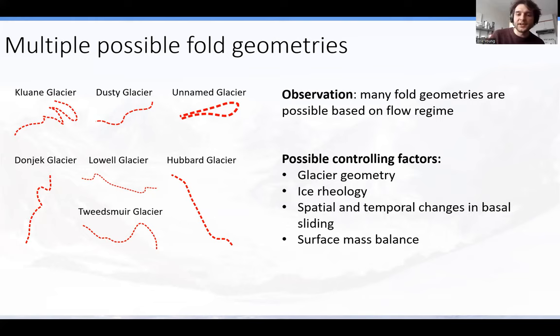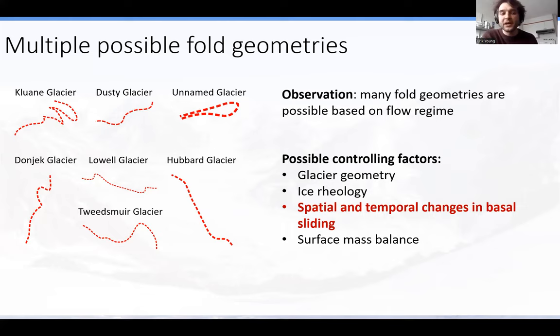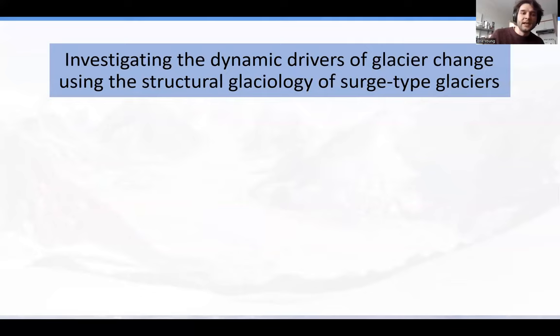What's particularly interesting is being able to resolve spatial and temporal changes in sliding throughout the surge cycle of these large glaciers. It's very hard to monitor and instrument the bed of a glacier, especially during surges — there's such strain that you often fracture the ice all the way through the ice column, gobbling up any instrumentation left behind. What we're aiming to do is use the geometry of these folds as a window into the basal environment — to reconstruct the histories of basal sliding.